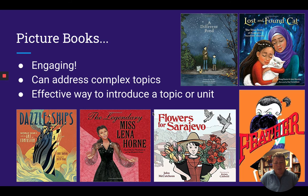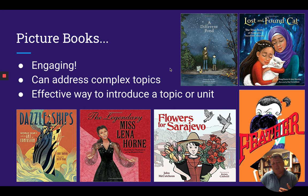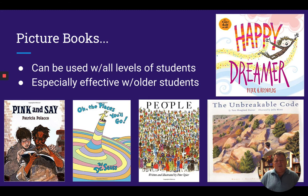The other great thing about picture books is how they can address complex topics, really leading into a good way to introduce a bigger unit. A Different Pond is about a boy whose father came over during the 1970s Vietnam boat lift and lives in Minnesota, exploring the complexities of first-generation Americans living within both their family's culture and American life. Here's Flowers for Sarajevo, about the conflict in the town of Sarajevo, Yugoslavia. Really good ways to introduce topics. Students are never too old to enjoy a good picture book — I've read them to high school students and college students.